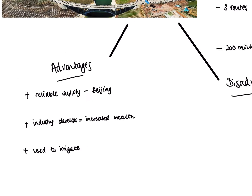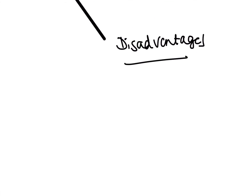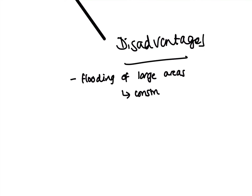Comparing those advantages to the disadvantages, there are perhaps more disadvantages than advantages. The first big disadvantage is that in order to build these routes, large areas must be flooded. This destroys natural habitats and impacts ecosystems. The construction work itself also threatens the fragile ecosystems found along the paths of these routes.